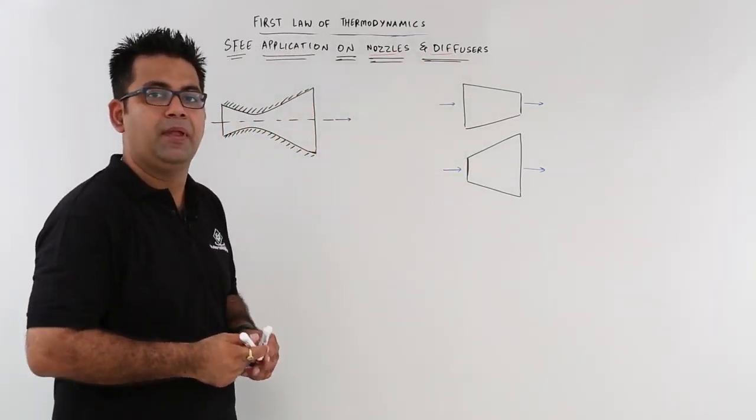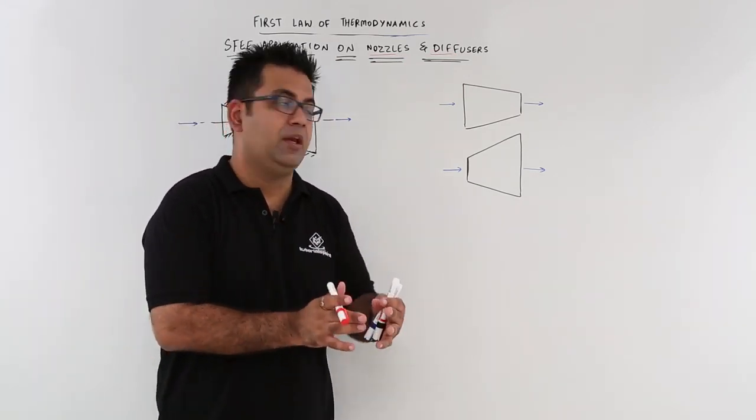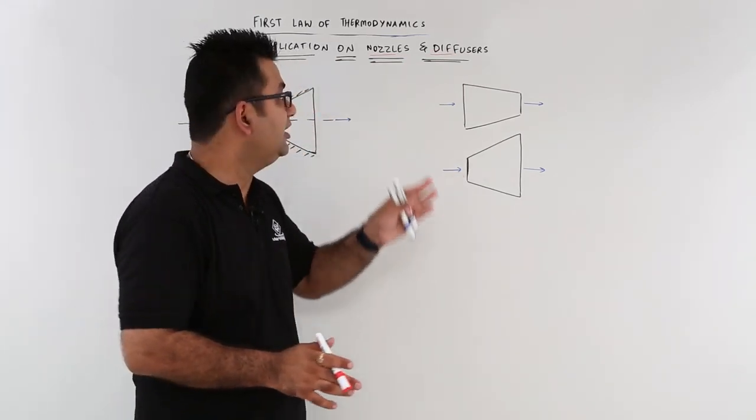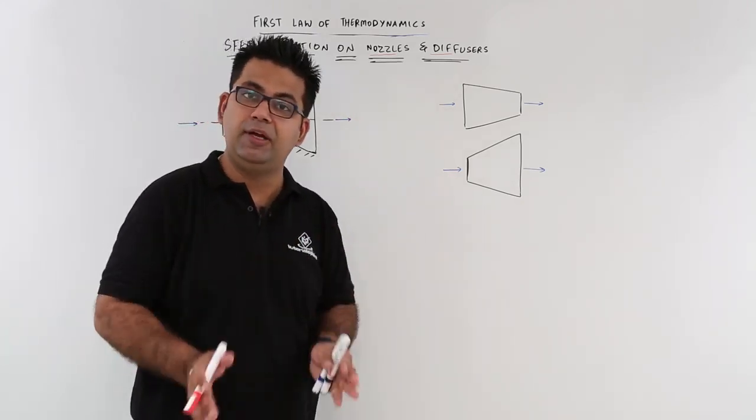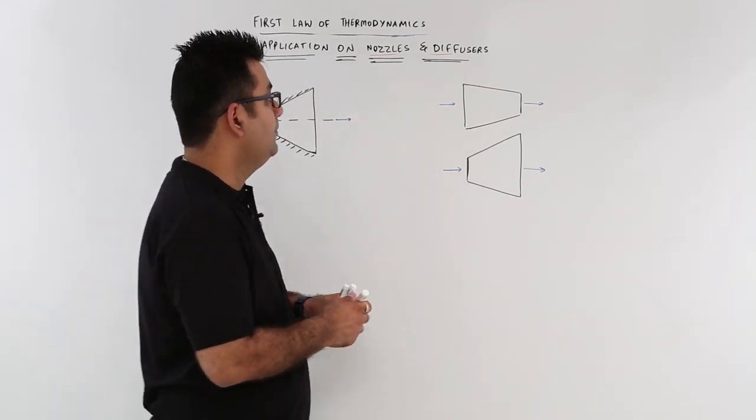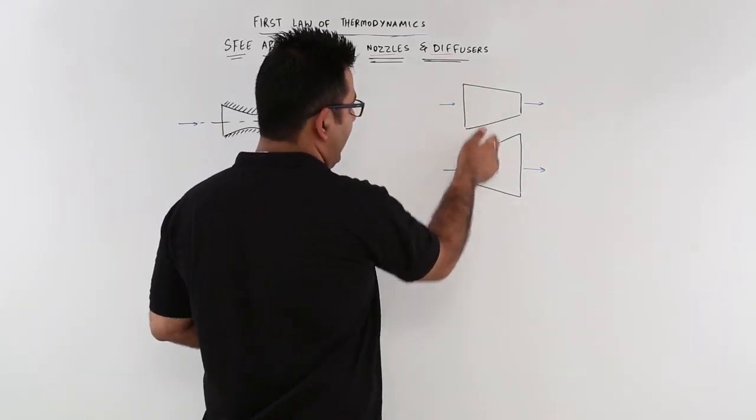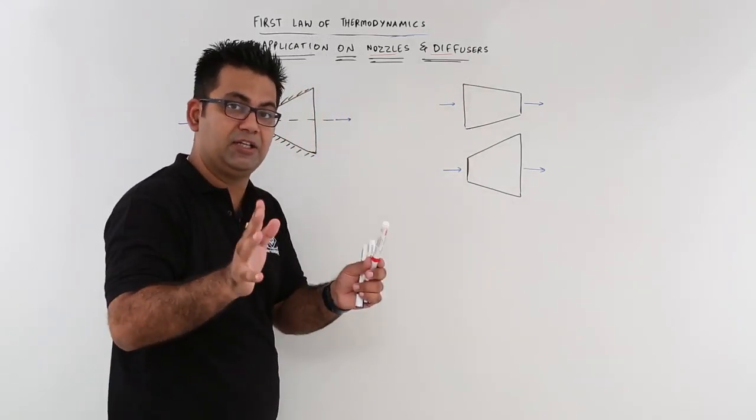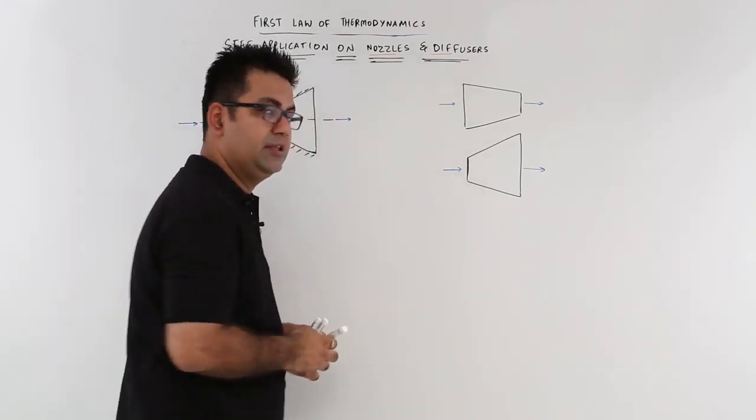First of all, we need to understand the difference between a nozzle and a diffuser because these two devices are extensively used in a lot of engineering applications. So these are the two diagrams which you should remember and understand to differentiate between these two devices.